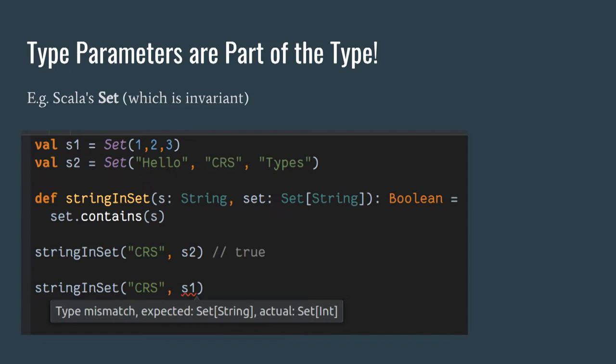This is where Scala's type system really kicks in. Scala has the concept of variance between types and subtypes. A great underestimated one is invariance — everybody talks about covariant and contravariant, but with invariance any type parameter change makes it a completely different type. For example, Set[Int] and Set[String] are by Scala's compiler standards completely different types.